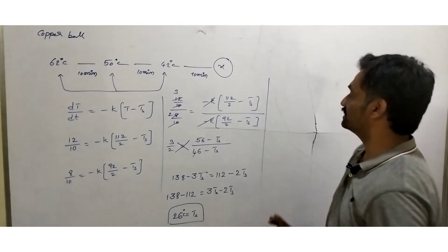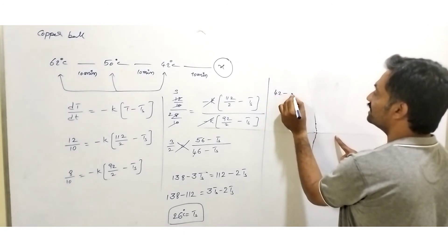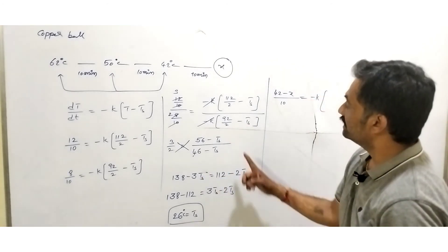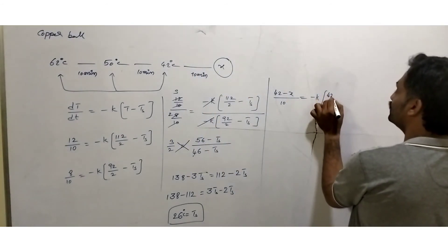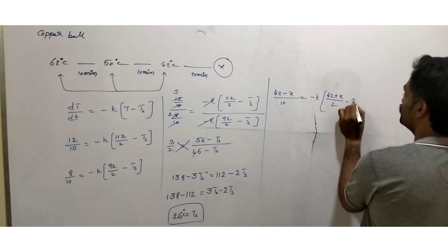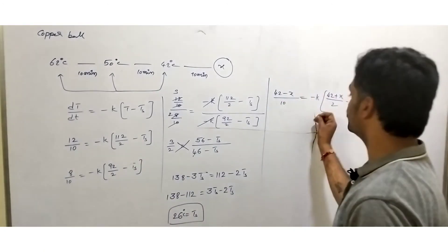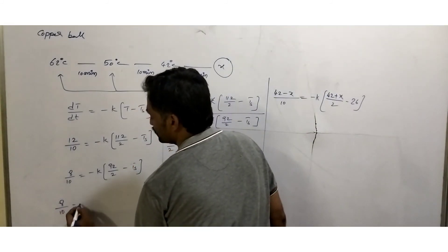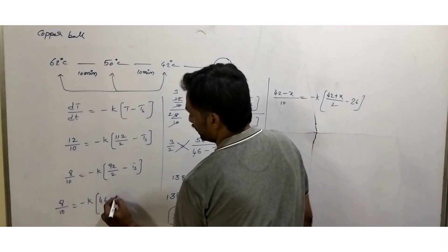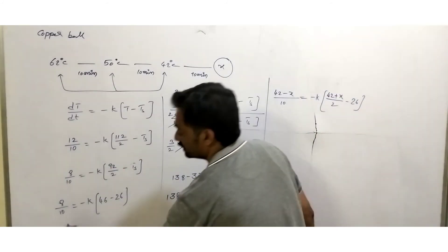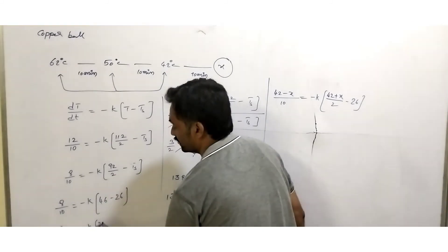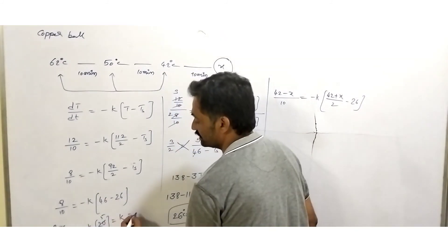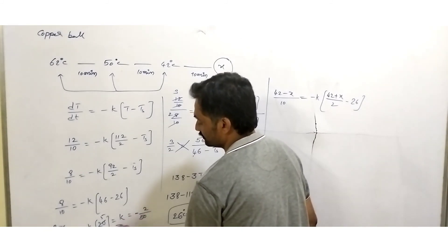Now we have to find the temperature x after the next 10 minutes. Using the second interval to find K: 8/10 = −K × (46 − 26) = −K × 20, so K = −2/25. Substituting into the third interval equation: (42 − x)/10 = (−2/25) × [(42 + x)/2 − 26].